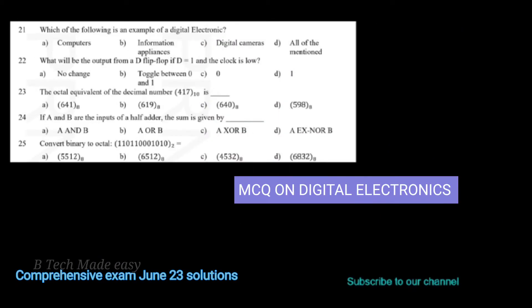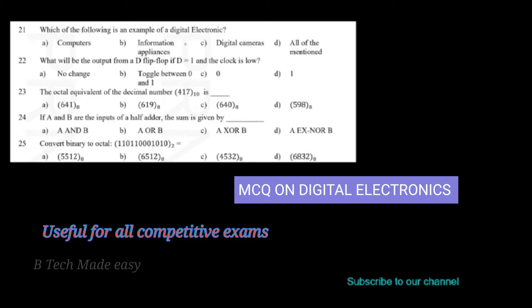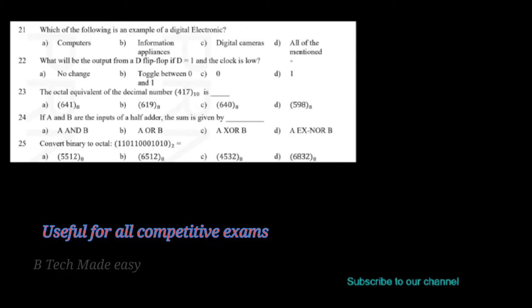We have a question about digital electronics. First question: which of the following is an example of digital electronics? Option A: computers. Option B: information appliances. Option C: digital cameras. And D: all of the above. The answer is D, all of the above.